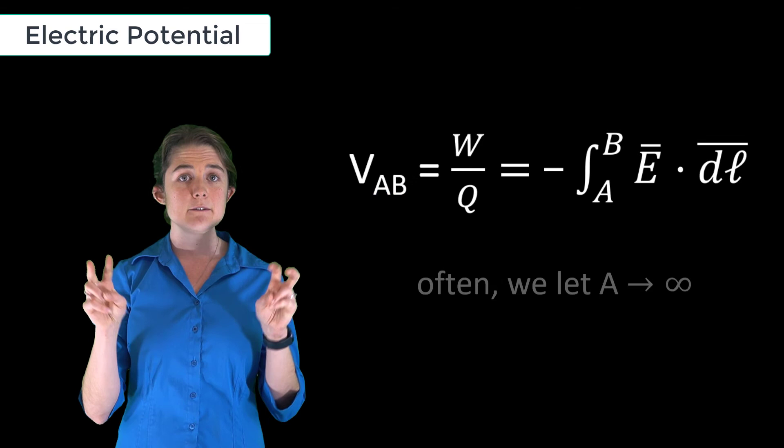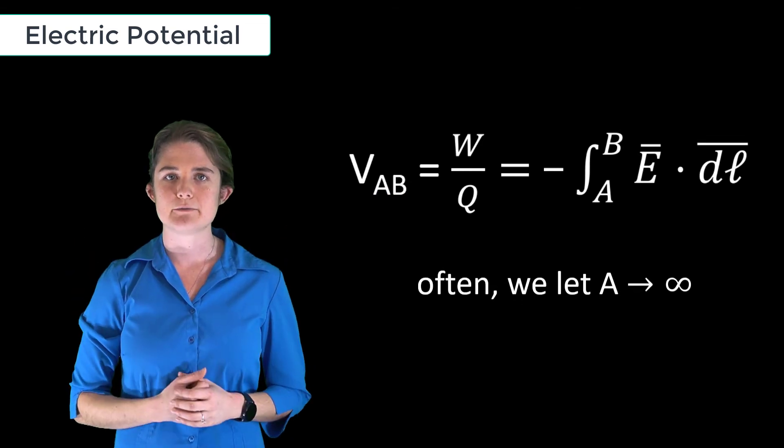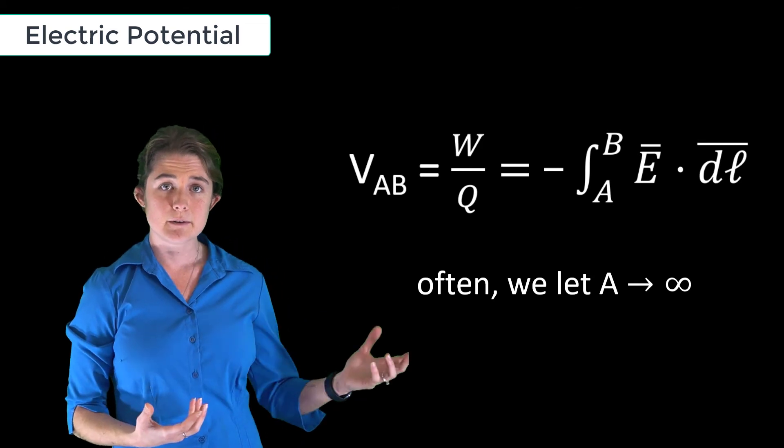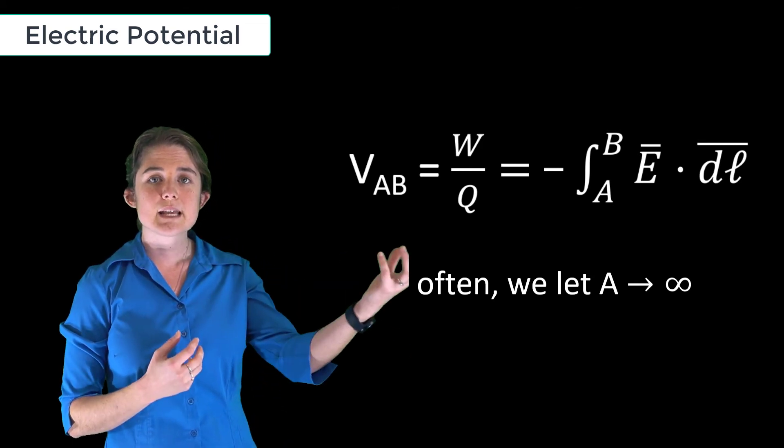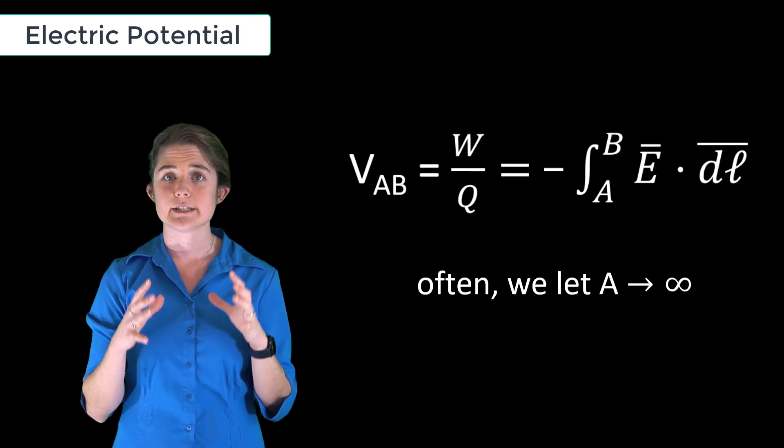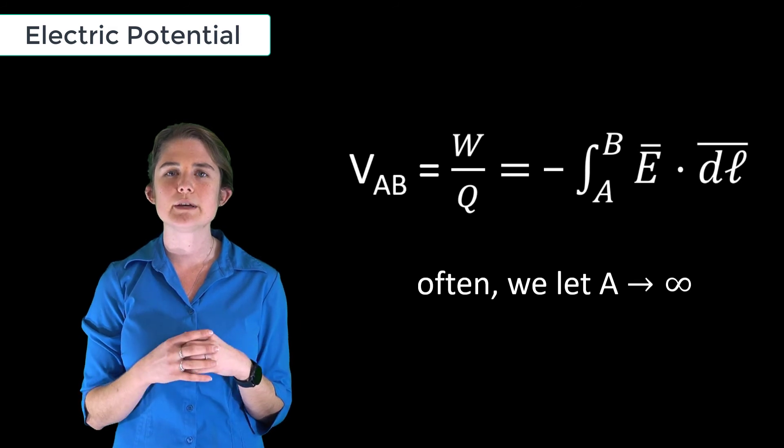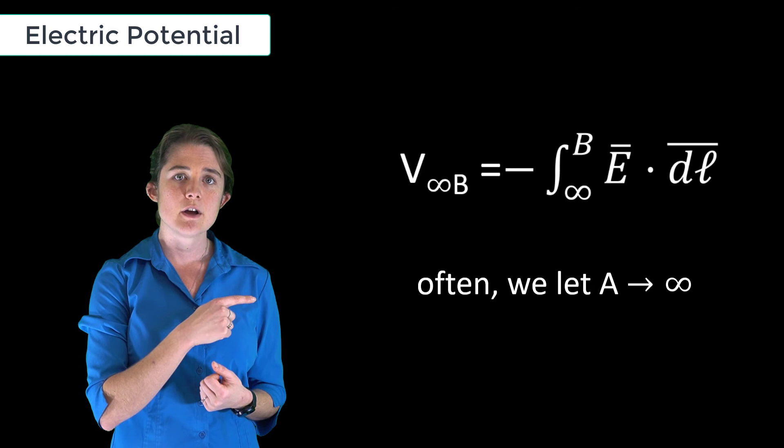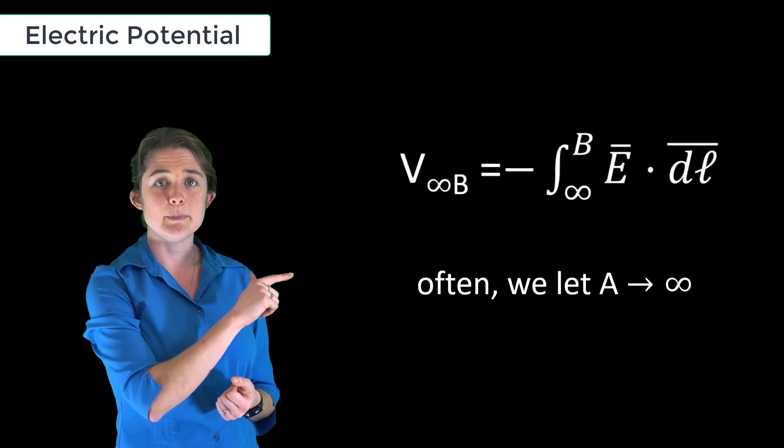However, we sometimes take infinitely far away as a default reference point. We assume that the electric field is zero at this infinitely far away point because it is infinitely far away from any of the charges in our system. When we do this, the limits of the line integral in the voltage definition equation go from infinity to B.